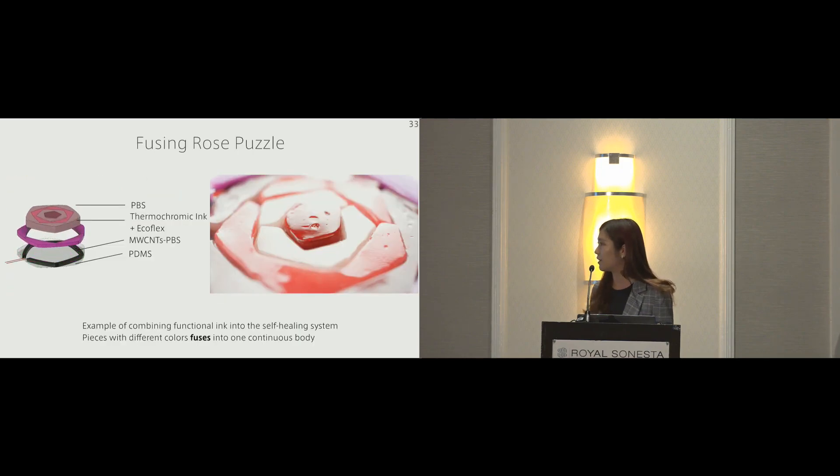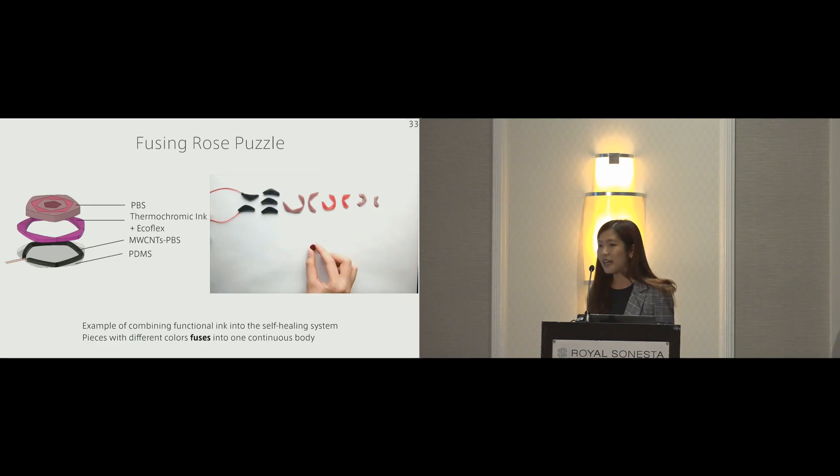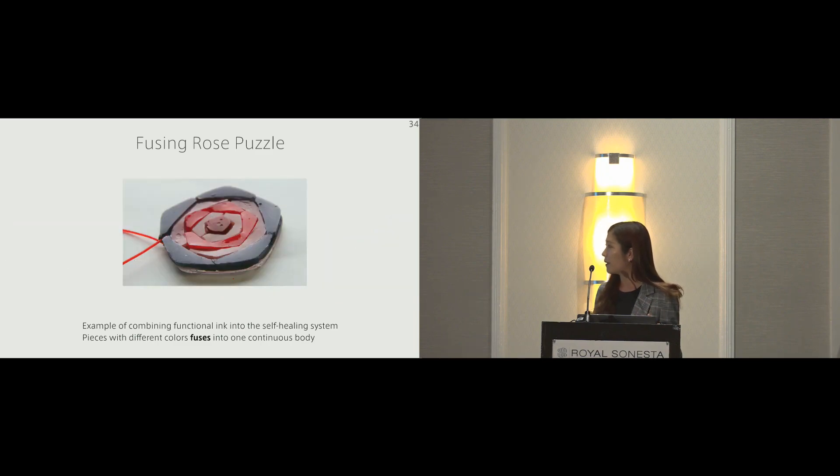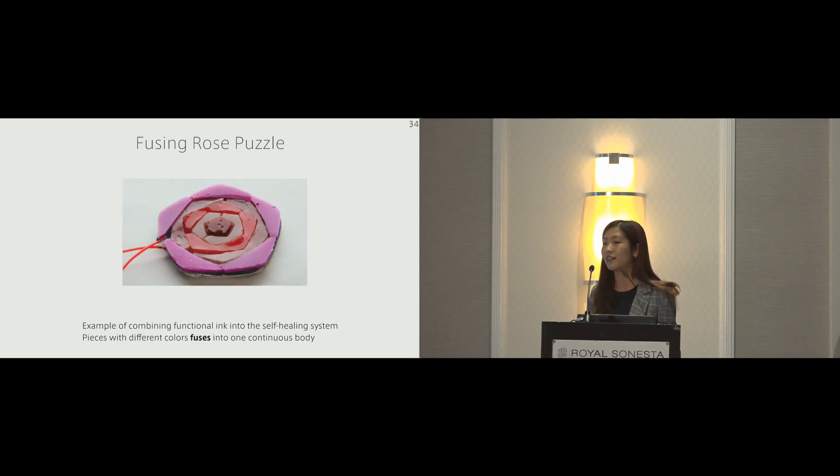Our last application is a fusing rose puzzle. We dye PBS with different colors. After we connect them, they will self-fuse into a continuous and uniform body after six hours. Multiple multi-walled carbon nanotube strips will also self-heal into one strip. When we provide power to it, it will generate heat for the thermochromic layer to change color on the edge.